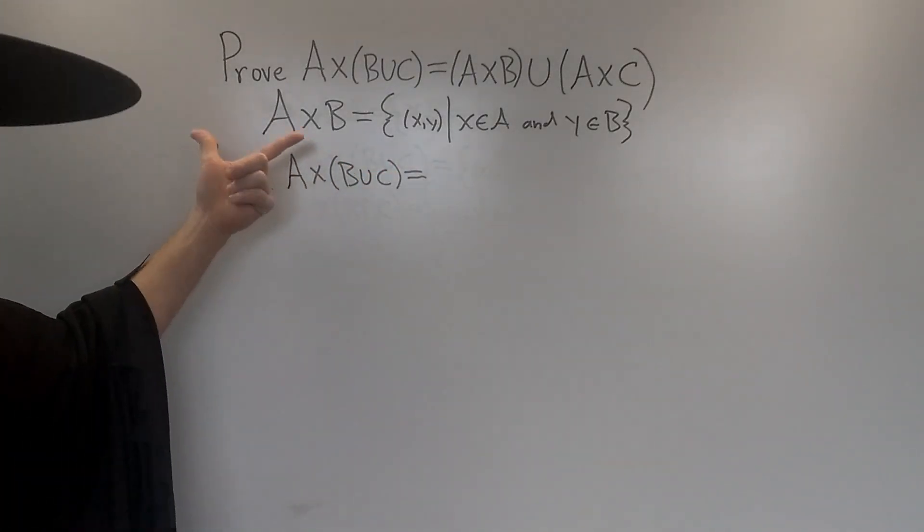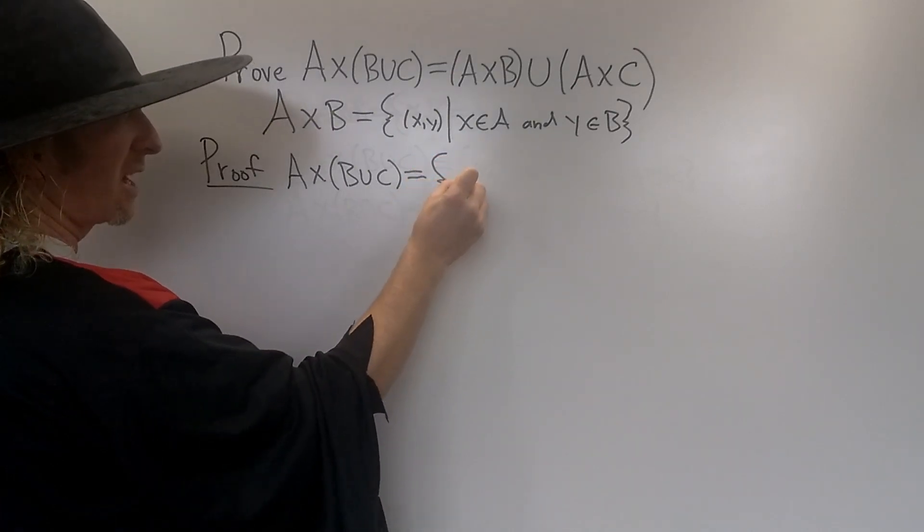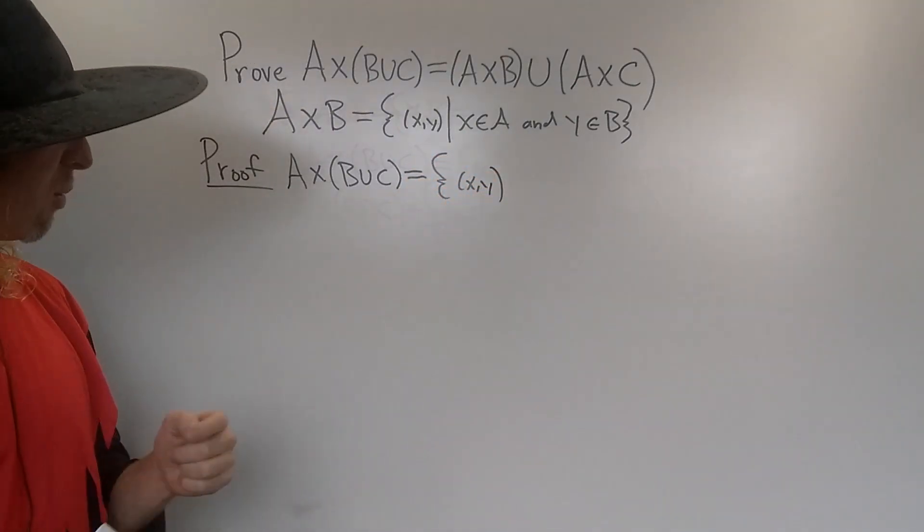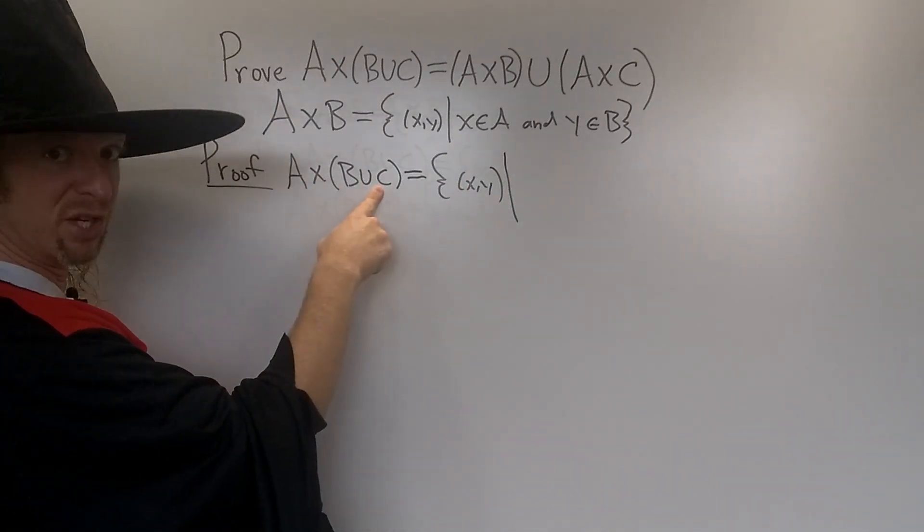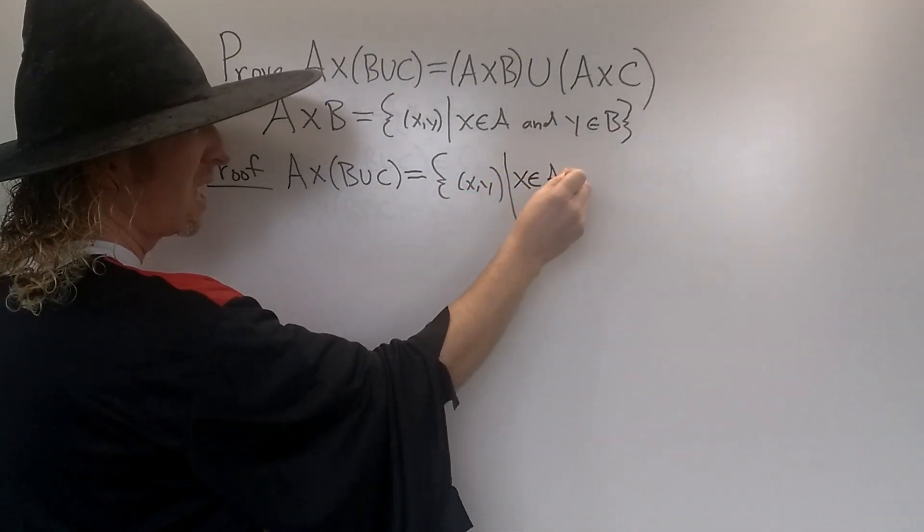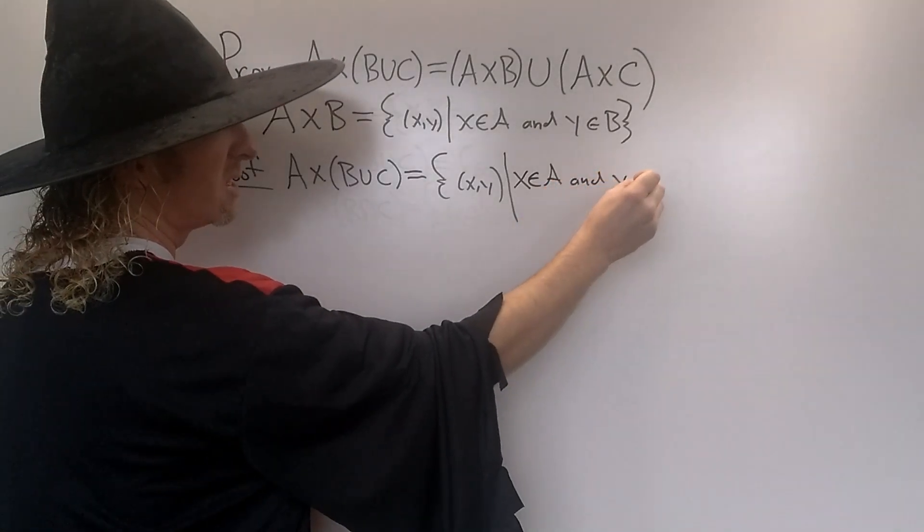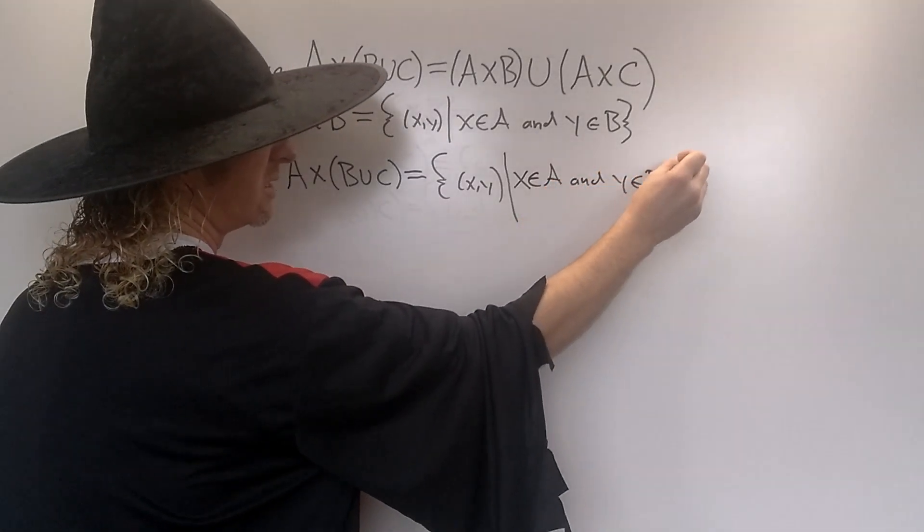Alright, so this is all the ordered pairs. So this is the set of all of the (x,y)'s, right? All of the (x,y)'s such that x∈A and y∈(B∪C). So x∈A and y∈(B∪C).